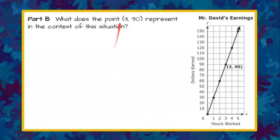Part B: What does the point (3, 90) represent in the context of this situation? Go ahead and pause now.